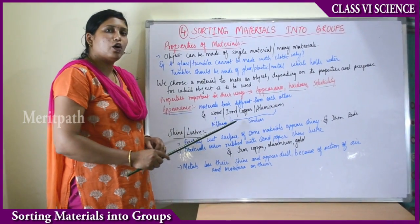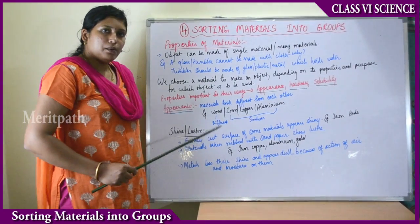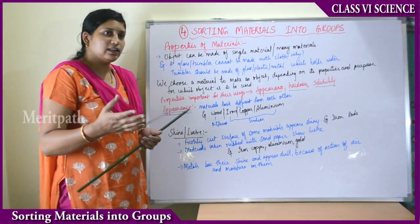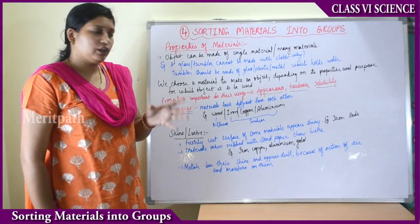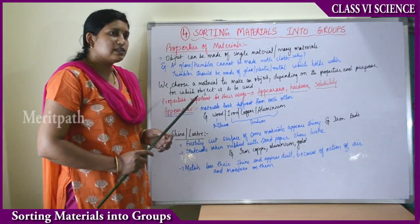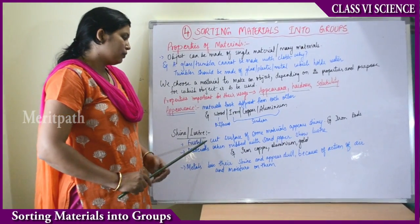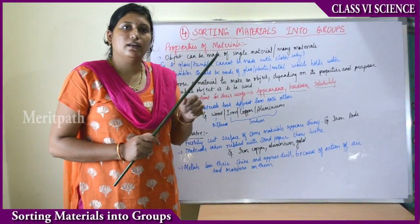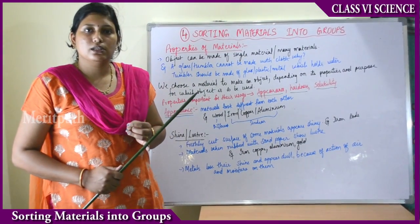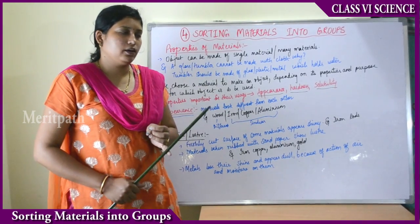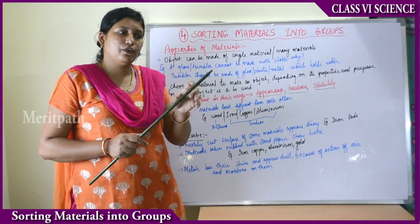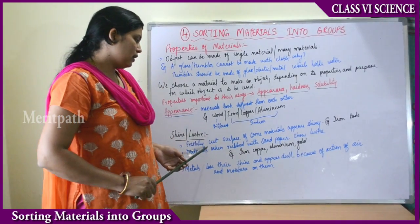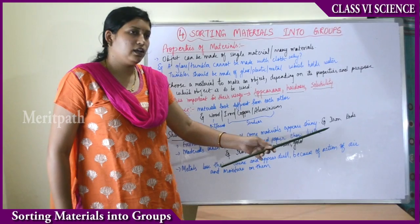Another property related to appearance is shine or luster. Luster is the shiny, glossy appearance of an object — the shimmer or glow of that object. Freshly cut surfaces of some materials look shiny. For example, if you observe in a construction site where iron rods are being cut, the freshly cut surface of the iron rod looks shiny when sunlight falls on it.